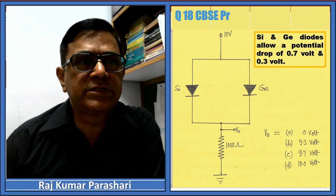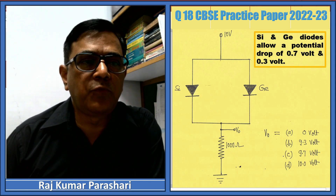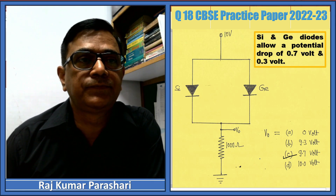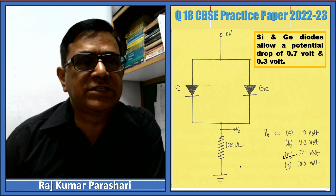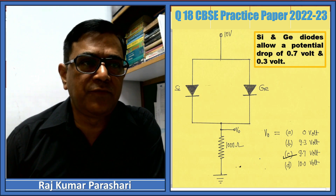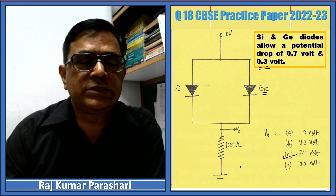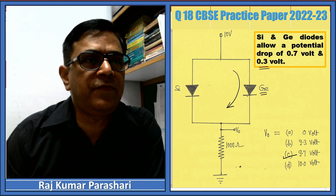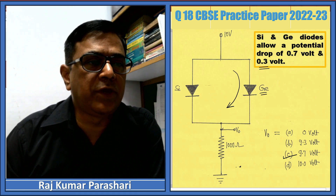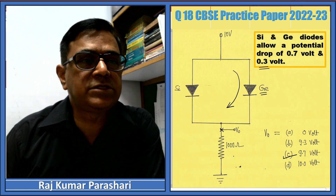Recently this problem appeared in the CBSC released practice paper 2022-23. The answer provided was 9.7 volts without solution. If you look at its solution elsewhere, every solution has tried to justify this answer. The argument was that the cut-in voltage of germanium is smaller — 0.3 volts — and hence current should flow through the germanium, so the potential drop is 0.3 volts, leaving 9.7 volts at that point. I disagree with this argument, and hence this video.